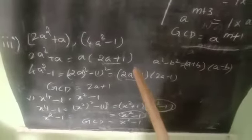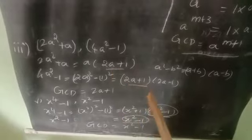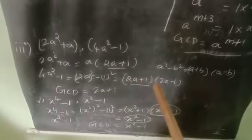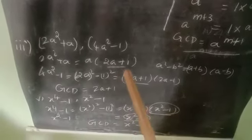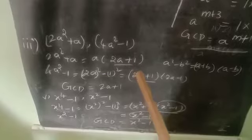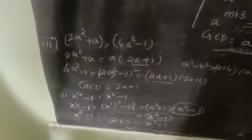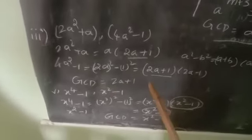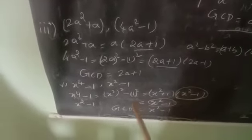So which term is common? (2a + 1). So the GCD of 2a² + a and 4a² − 1 is (2a + 1).